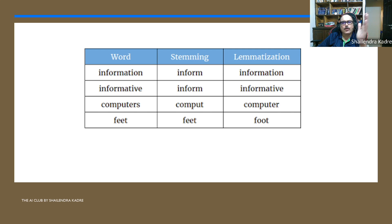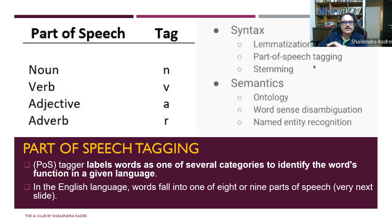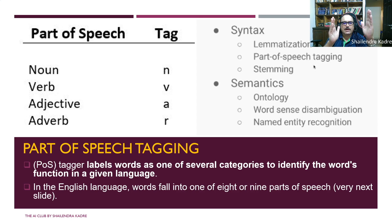Now, part of speech. The basic parts of speech are noun (N), verb (V), adjective (A), and adverb (R) — note that the tag for adverb is R. Part of speech tagging means identifying different parts of a sentence: which word is a noun, which is a verb, which is an adjective, which is an adverb. So breaking a sentence into these categories is called POS tagging.